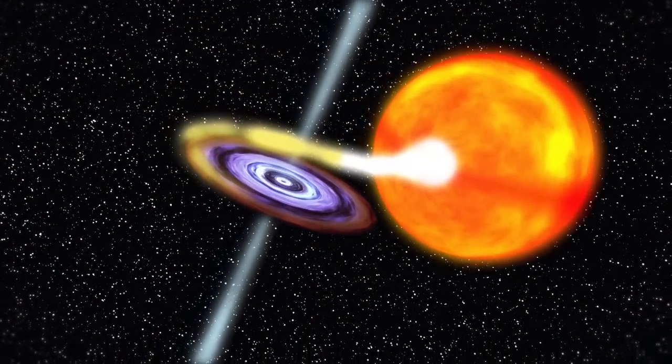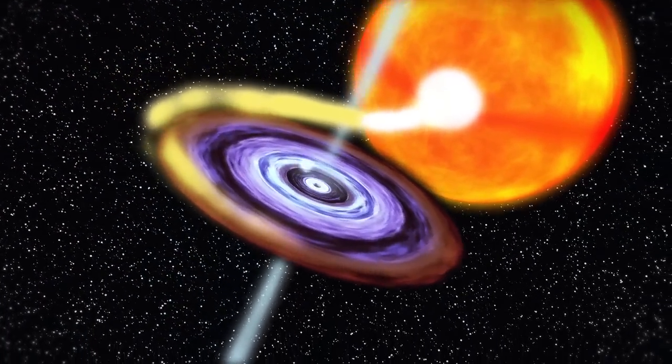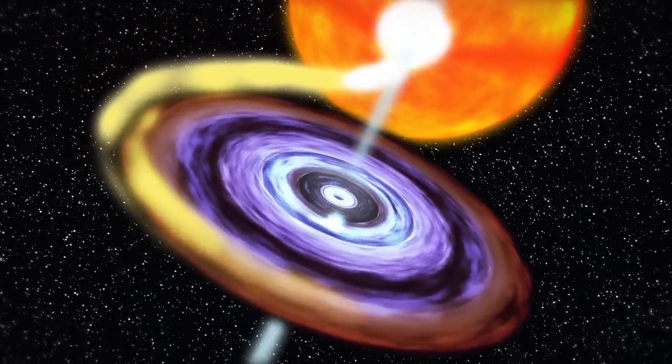The black hole is part of a binary system with a normal star like the Sun. A stream of gas from the normal star flows into an accretion disk around the black hole.